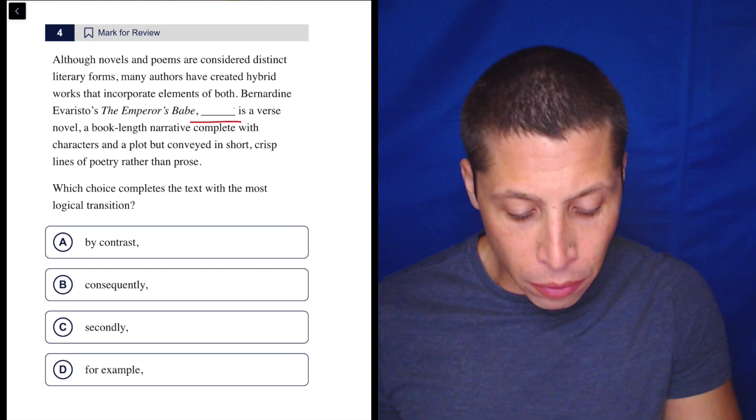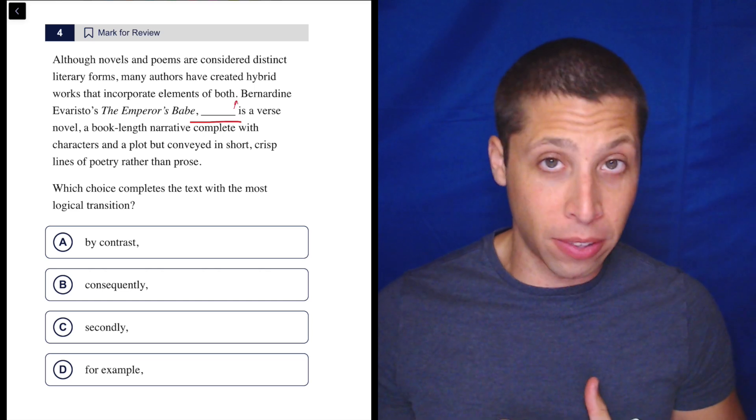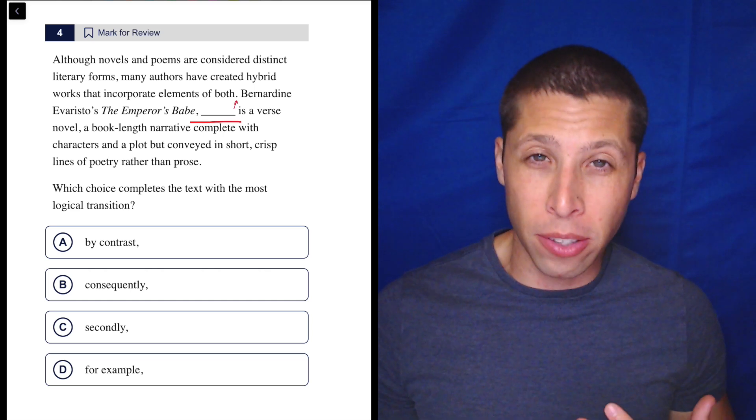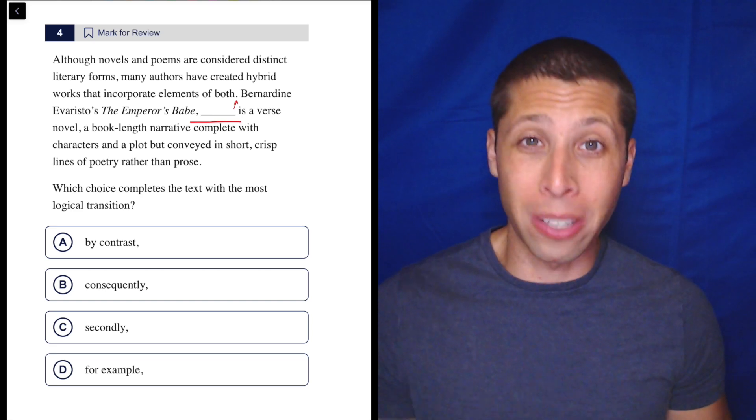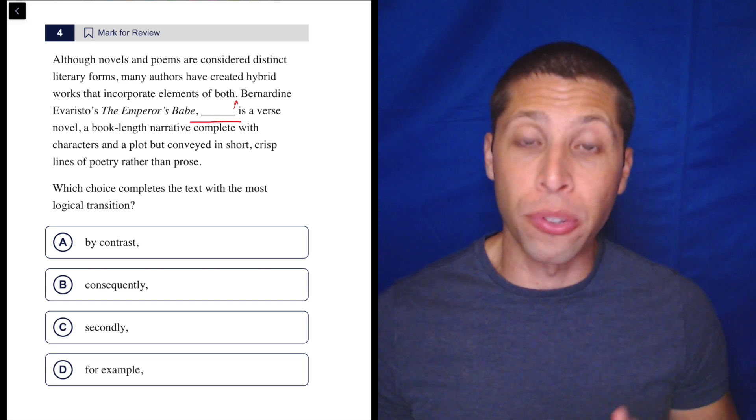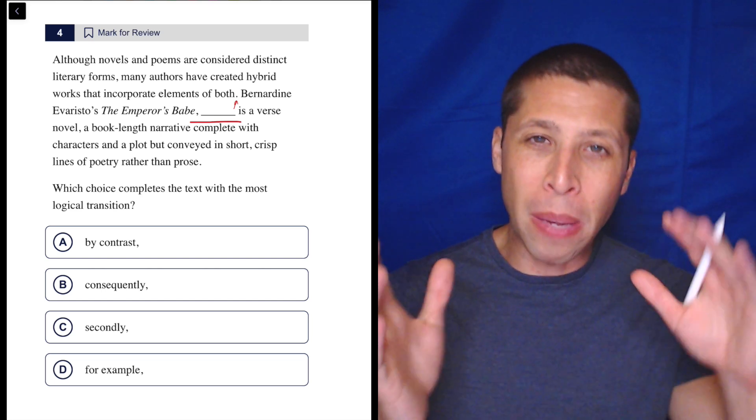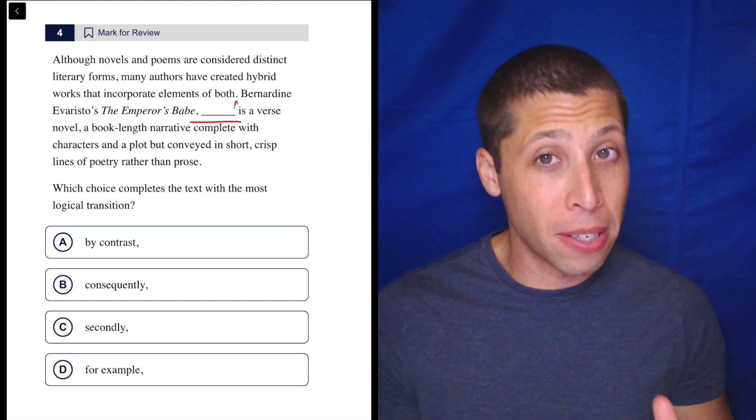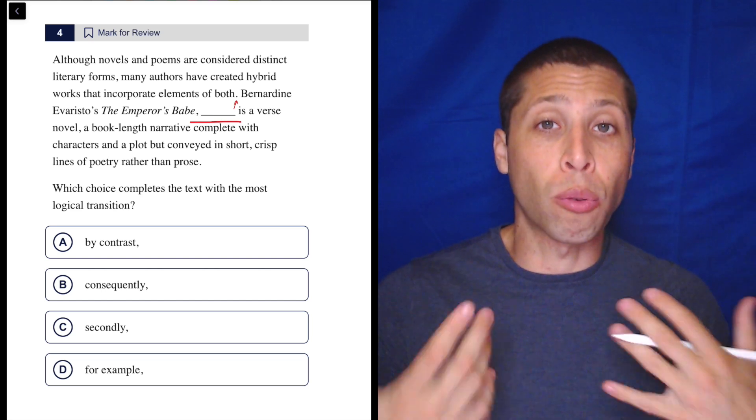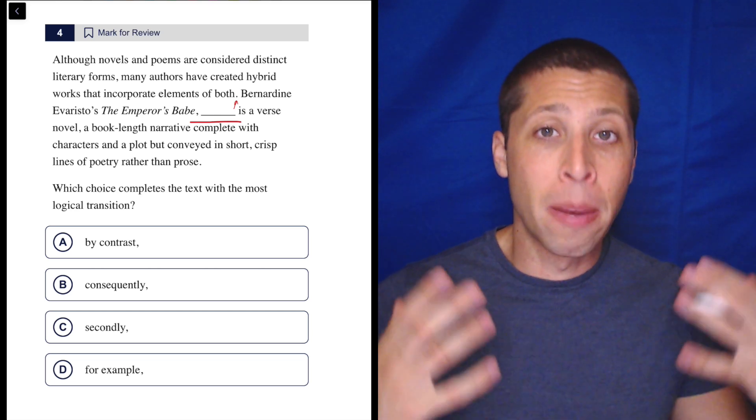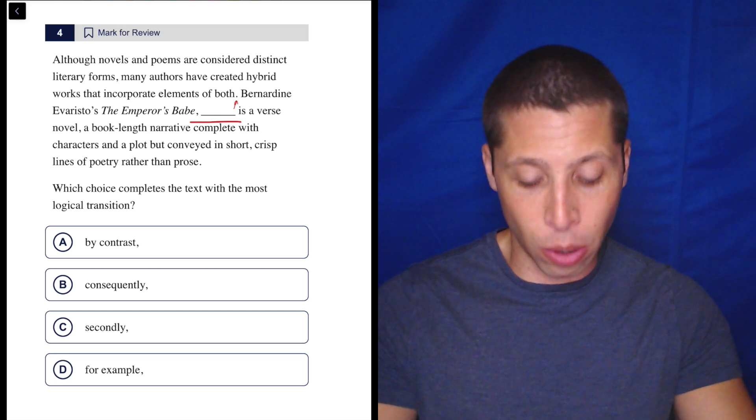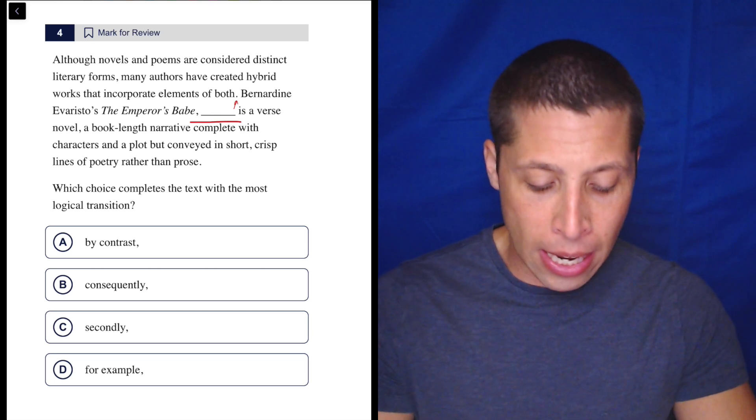We can move this blank to the front of the sentence where we would normally see these transition words—where we would normally put words like but, so, and that we use in our own conversations. If it's in the middle and being separated from the sentence by two commas, that means that transition is an interruption. So it helps to picture the blank at the beginning of the sentence.